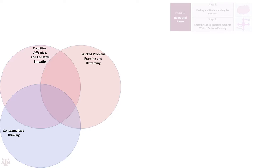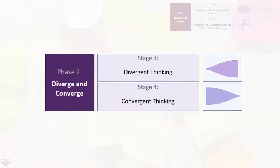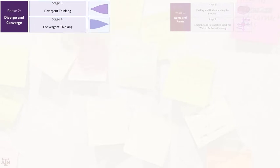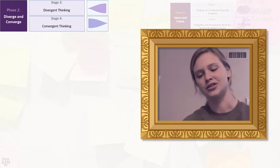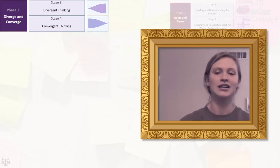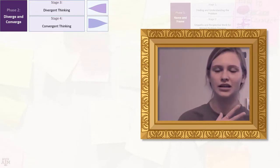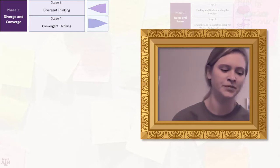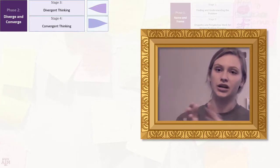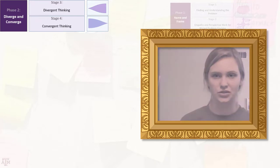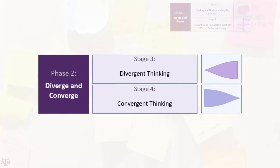In the next phase, students brainstorm to come up with as many possible solution ideas as they can. Phase two is Diverge and Converge. Divergent thinking, in the context of this project, means taking your narrowed-down problem and coming up with a wide variety of different solutions. Students individually write or draw each idea on a sticky note and place them on a wall — creative, unusual, or even impossible ideas are encouraged.